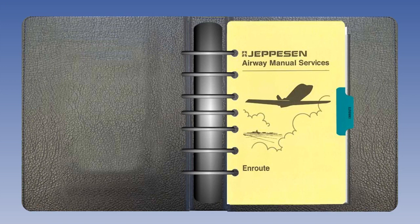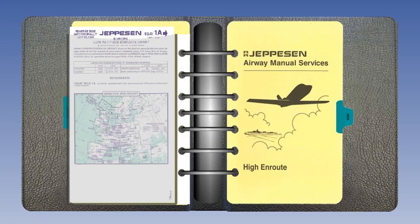The Jeppesen charts are divided into two sections: low-level and high-level. The low-level charts are contained in the section marked Enroute, and the high-level charts are contained in the section marked High.